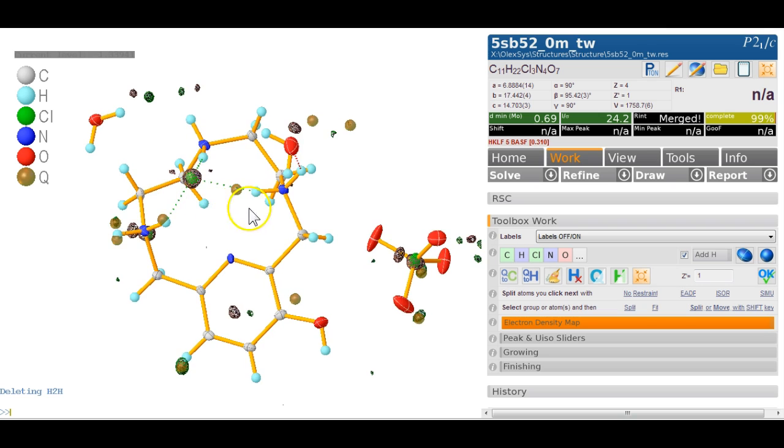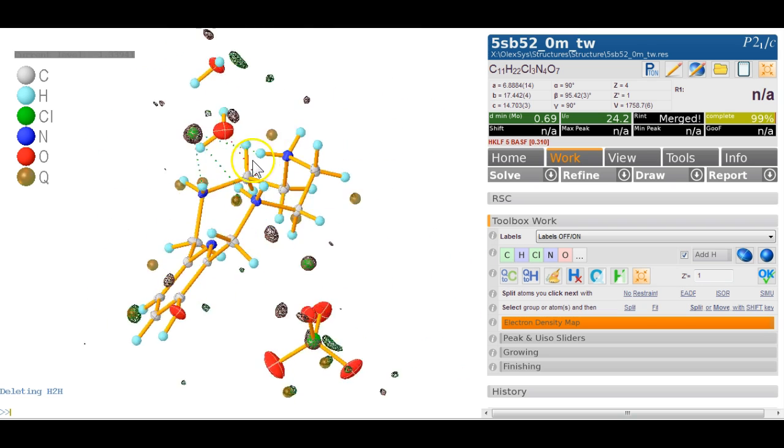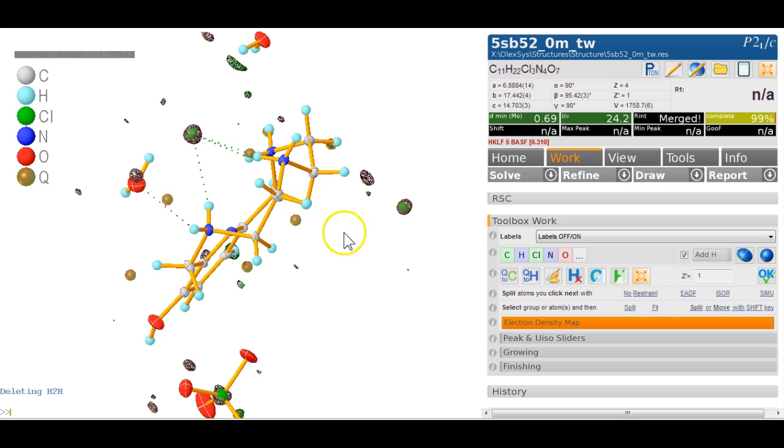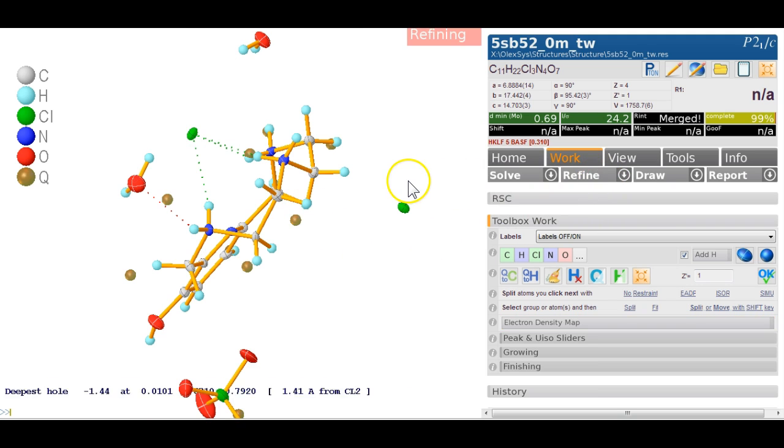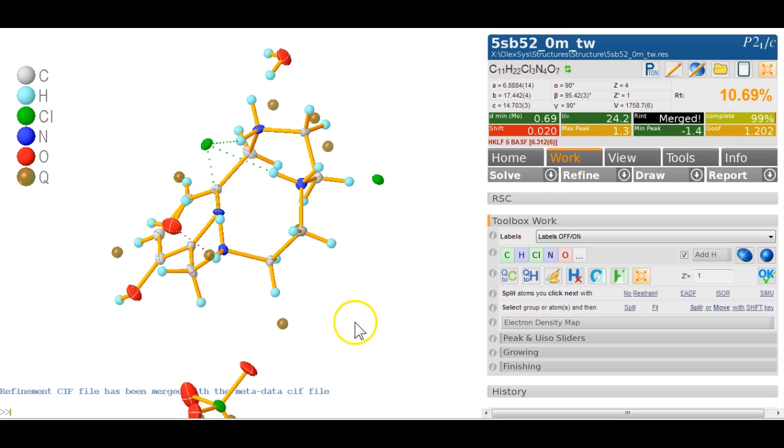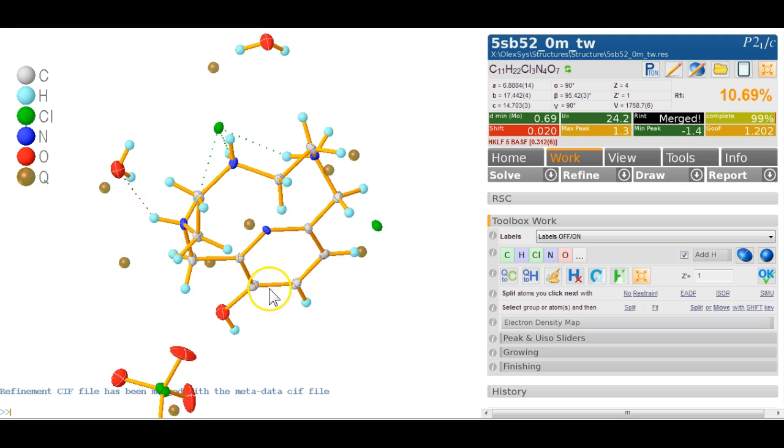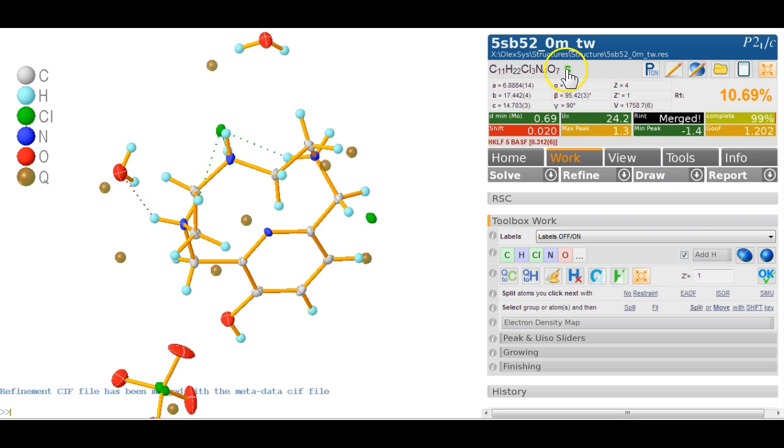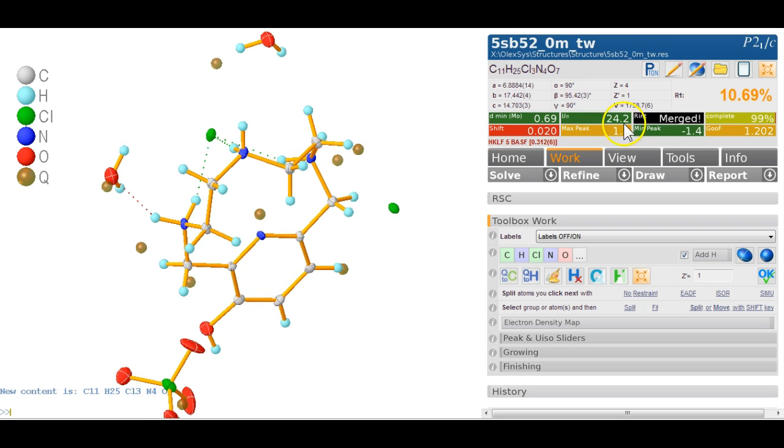We need another positive charge somewhere and I'm not quite sure where to get this from. So first of all, refine it and have a look at the output. So the R factors drop, which is a good sign. And where is the biggest peak? This will update the formula. The biggest peak is 1.3, that's quite significant and it's very close to this one here.